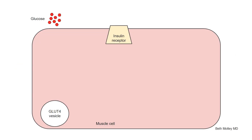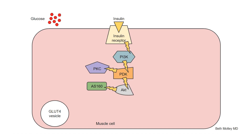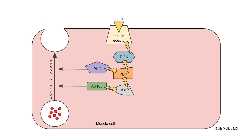Let's zoom in and look at that muscle cell and see exactly how we store the glucose in the muscle cell. Up top, we have our insulin receptor. Down at the bottom, we have our glucose vesicle waiting to pick up the glucose hanging out outside the cell in the bloodstream. Insulin is our key — it unlocks the door. It signals the insulin receptor, which signals all of these downstream enzymes that together allow the glucose vesicle to move to the edge and invite glucose into the cell. That is how a happy cell should work.